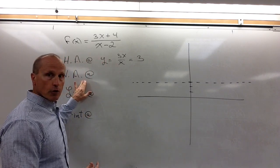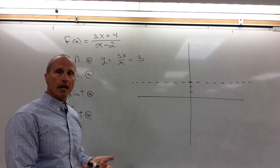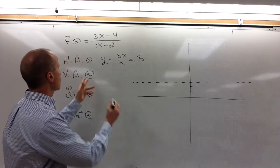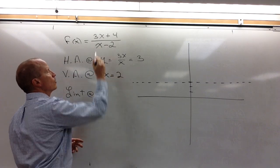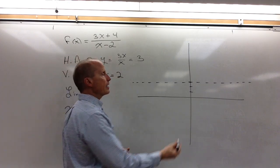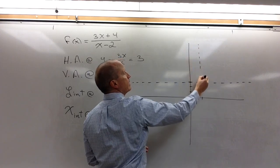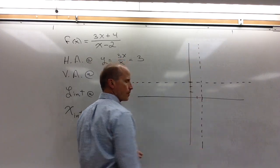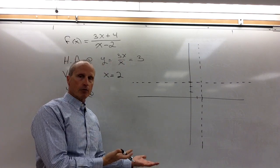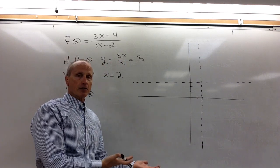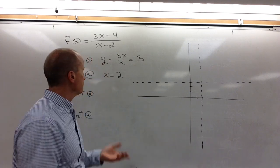The vertical asymptotes are very easy to find because those are just the values that allow the denominator to be zero. So in this case, my vertical asymptote would be at x = 2. Two is not in our domain, and therefore we get a vertical asymptote there. Every value that allows the denominator to be zero gives us a vertical asymptote, with one exception which we'll look at in just a moment.